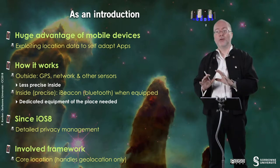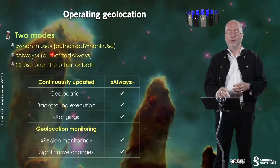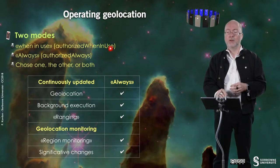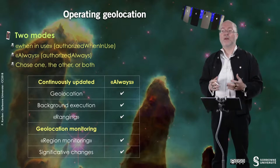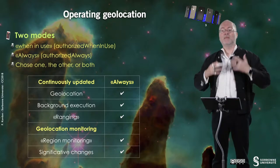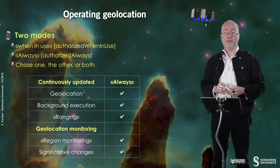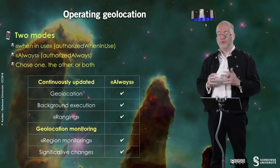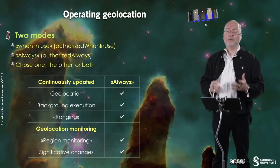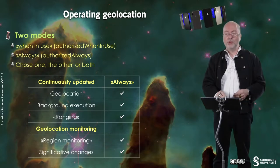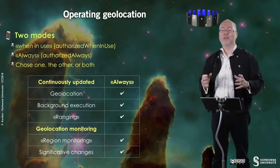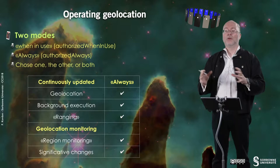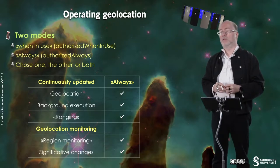Maps are supported by another framework. There are two modes when you operate geolocation. The first mode is 'when in use' — this is the type of authorization you request — which means it works when your app is being used. The other mode is 'always'. With the always mode, your geolocation is continuously updated, background execution is available, and you have ranging.